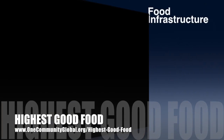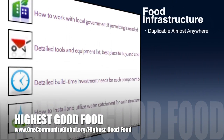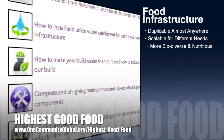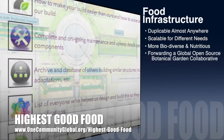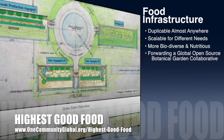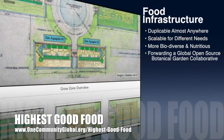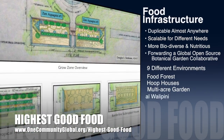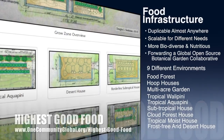One Community's approach to highest good food is duplicable almost anywhere, scalable for different needs, more biodiverse and nutritious, part of forwarding a global open source botanical garden collaborative, and includes nine different free shared and duplicable growing environments.